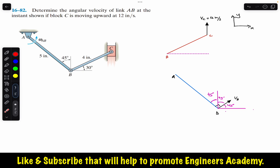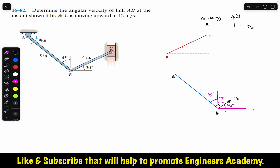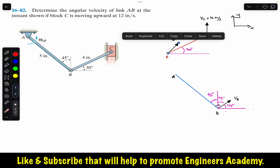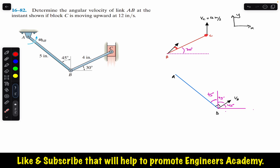Now that we know the direction of V_B, we draw it on link BC as well. Link BC makes 30 degrees with the horizontal, and V_B makes 45 degrees. So we can place V_B here making 45 degrees. Since BC makes 30 degrees and V_B makes 45 degrees with the horizontal, velocity V_B makes 15 degrees with link BC.